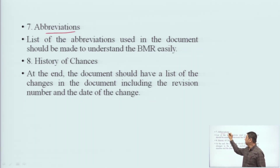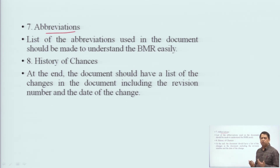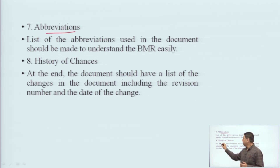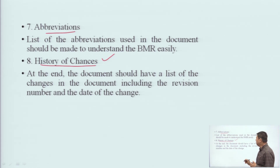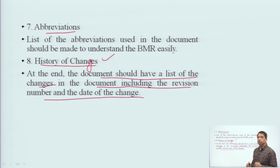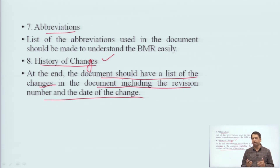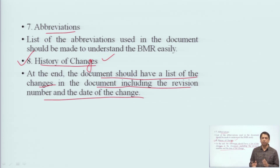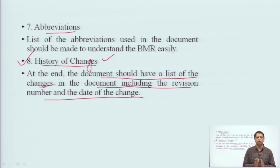The seventh part is Abbreviations. Many abbreviations are used, and their listing is mentioned here. The eighth part is the History of Changes. At the end, the document should have a list of changes in the document, including the revision number and the date of change. Sometimes GMP requirements change or there is a regulatory binding, so if any document needs to be changed, the history of those changes is mentioned here. The previous document is also retained, so it is clearly visible what the previous document was and what the new document contains.